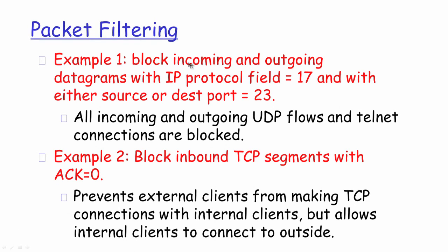For example: block incoming and outgoing datagrams with the IP protocol field set to 17 and with either source or destination port as 23. All incoming and outgoing UDP flows — because IP protocol field 17 refers to UDP at the higher level — with source or destination port 23, which is used for Telnet, would be blocked. This rule blocks all incoming and outgoing UDP flows specifically for the Telnet protocol.